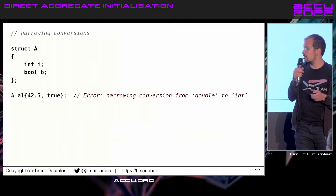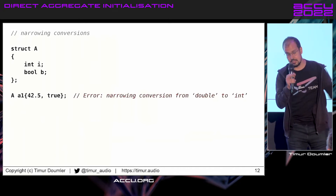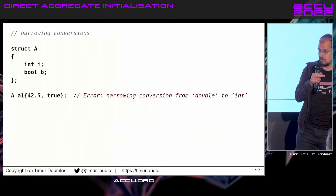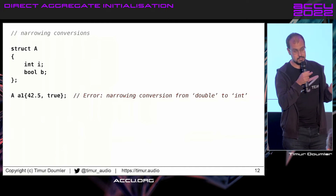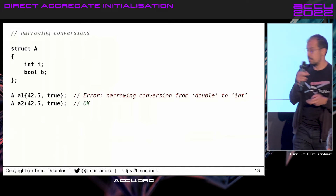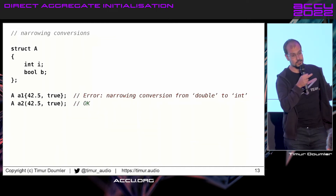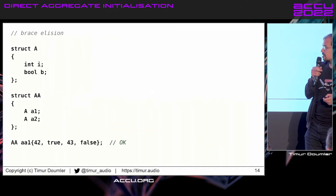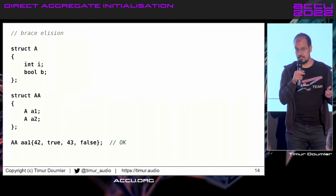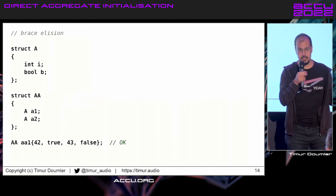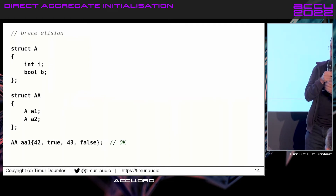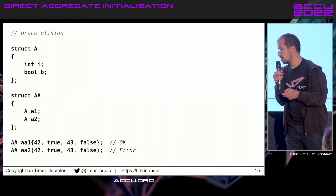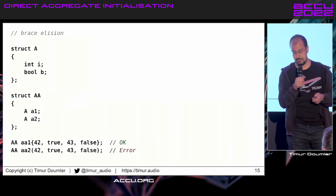One of them is that braces don't allow narrowing conversions, but parens do. On the other hand, braces allow brace elision if you have a nested aggregate, but parens don't.